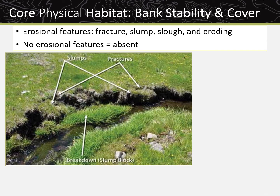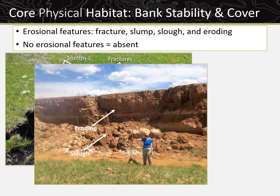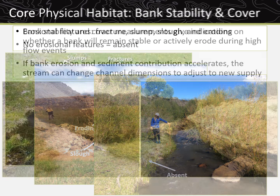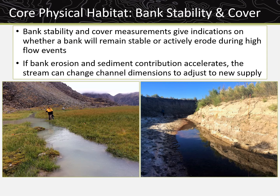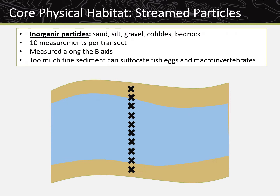Erosional features such as fracture, slump, slough, and eroding banks are identified for each plot. If no eroding features are present, the plot is designated as absent. Bank stability and cover measurements are important because they give indications on whether a bank will remain stable or actively erode during high flow events. Activities such as cattle grazing and recreation can alter vegetation cover and composition and directly influence bank cover and stability. If banks are unstable and uncovered, accelerated bank erosion, sediment addition to streams, and channel widening can all occur.